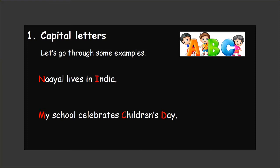Let's go through some examples. 'Niall lives in India.' — Niall is a person's name, India is a place. 'My school celebrates Children's Day.' — My is the first word of the sentence, and Children's Day is an event. I hope you all understood about capital letters.